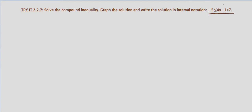When you have the expression in between two values like that, it simply means negative 5 is less than or equal to 4x minus 1 AND 4x minus 1 is less than 7. So we can just set up both of those inequalities in an AND compound inequality, and then it's just like the previous problems we've looked at. So we put negative 5 is less than or equal to 4x minus 1 AND 4x minus 1 is less than 7.